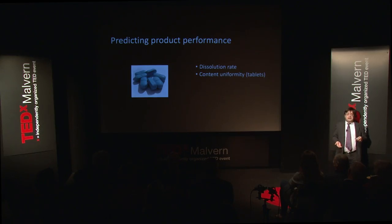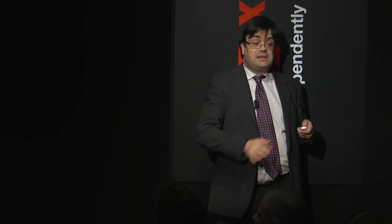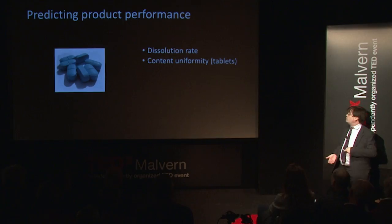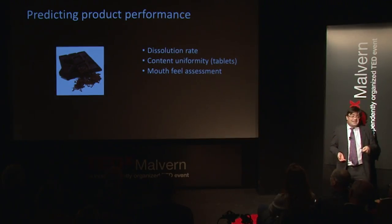If all the drug ended up in one tablet and all the filler in another, you could have an overdose. So ensuring equal content across all tablets is really important. With chocolate, the tongue is a really sensitive sizing instrument — if something tastes greasy or gritty, the particles are too big; if it tastes smooth, they're small enough.